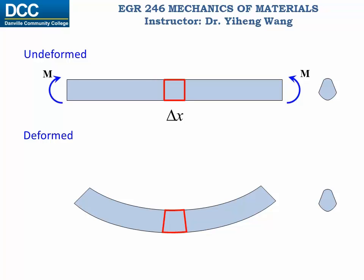But since the change in this segment is continuous, therefore there must exist a line in this rectangle for which its length will remain unchanged after deformation, still delta x.